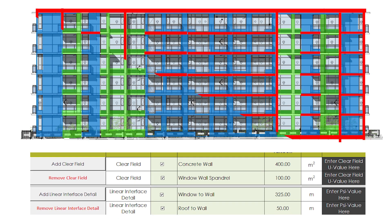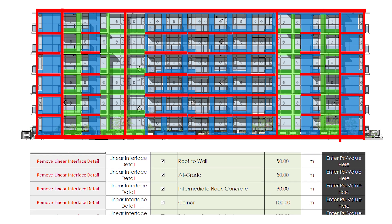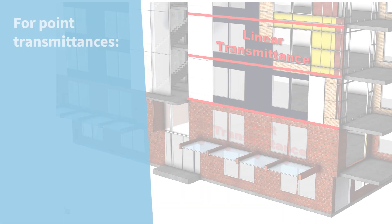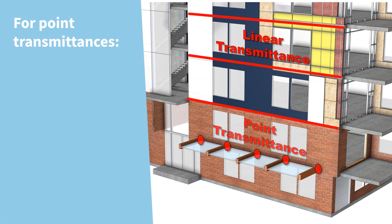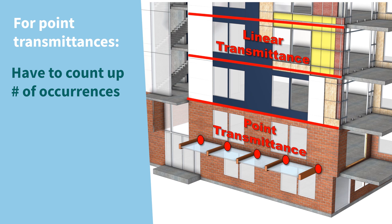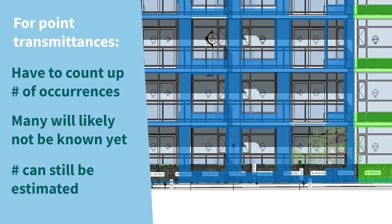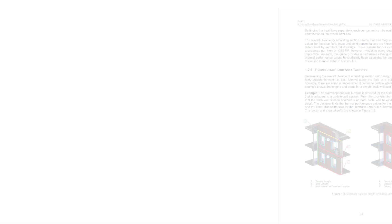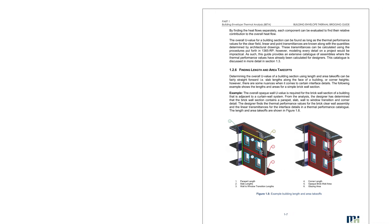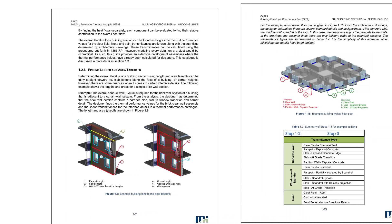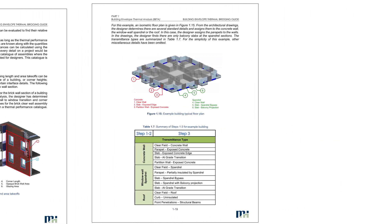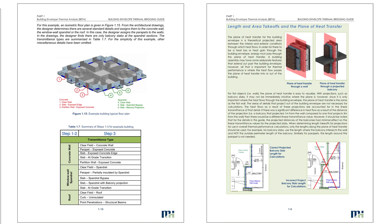This can be followed through for the remaining interface details. For point transmittances, you must count up how many beam penetrations, roof anchors, or other single point details occur. This will likely not be known until much later in the design, but you can estimate a number. In our case, we don't see any. The takeoff tips mentioned here and other special considerations are discussed further within the BETB guide and in the next video.